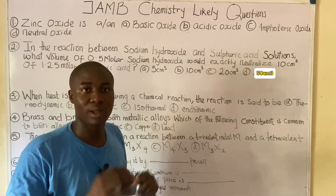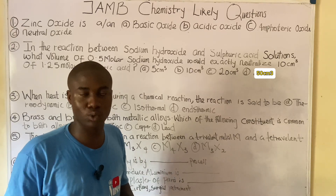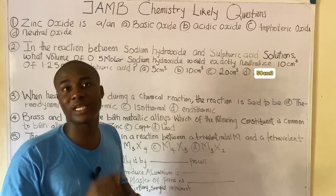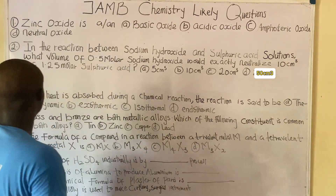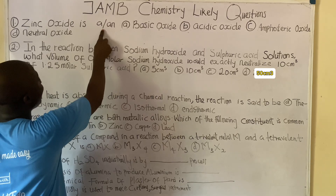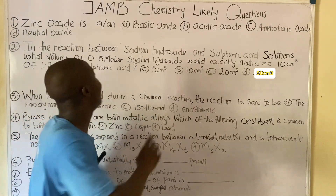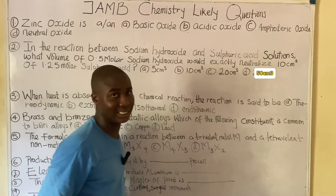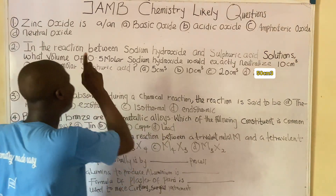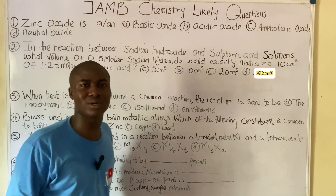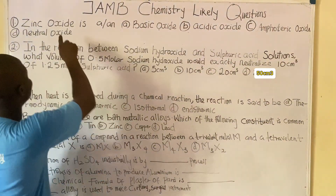Welcome back to my YouTube channel. In today's video lesson, I'll be solving different practice questions that cut across different topics in chemistry. Let's start with the first practice question: Is zinc oxide a basic oxide, an acidic oxide, an amphoteric oxide, or a neutral oxide?